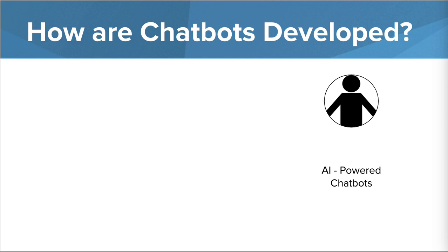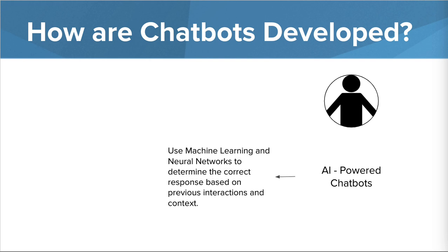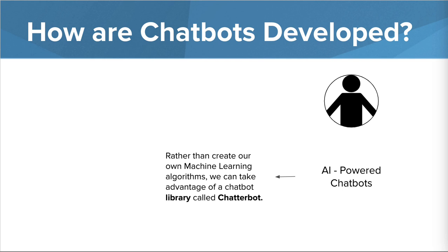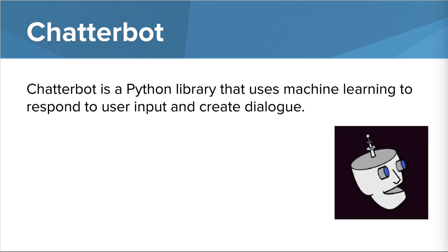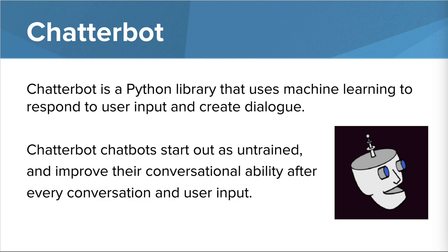In order to answer more unique questions, chatbots need to be powered by artificial intelligence. AI-powered chatbots use machine learning and neural networks to determine the correct response based on previous interactions and context. Rather than creating our own machine learning algorithms, we can take advantage of a chatbot library called ChatterBot. ChatterBot is a Python library that uses machine learning to respond to user input and create dialogue. ChatterBot chatbots start out as untrained and improve their conversational ability after every conversation and user input.